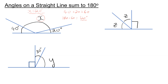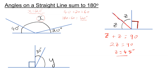In the second question, we have 90 degrees and then we have two lots of the angle Z. So 180 take away 90 is 90. So I can say that Z plus Z is equal to 90. So 2Z is 90. If I want 1Z, I need to divide by 2. So Z is just 45 degrees.